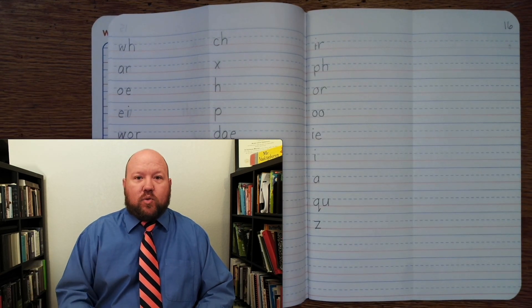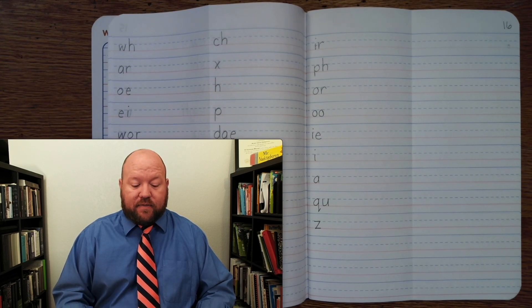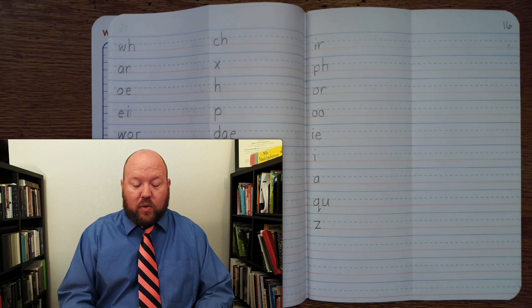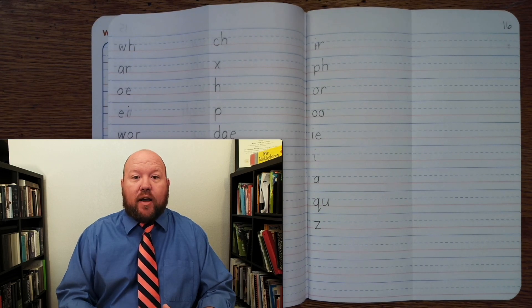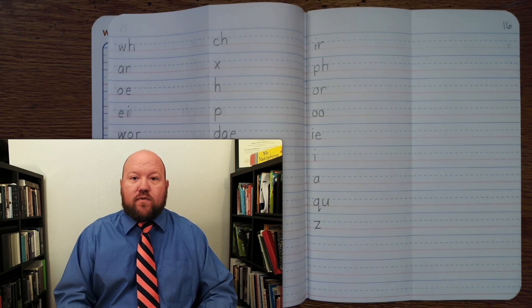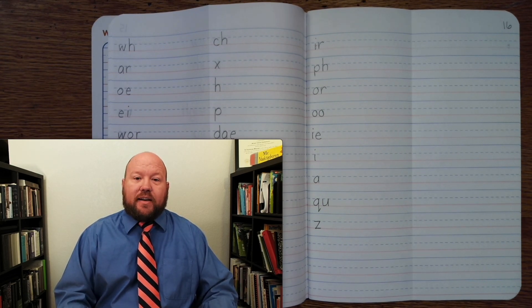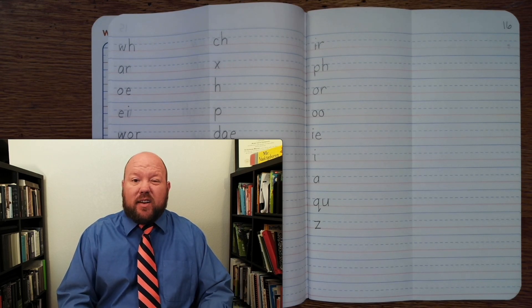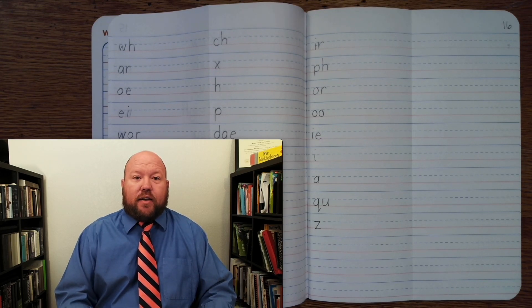This time through, I'll say the sounds followed by the cue. You should say the sound as well, and then write it. Now, when you write it, don't look at mine. Do your best to do it on your own from memory. Once you're finished, look at mine to see if you got it correct. If you did, great. If you didn't, that's okay. Just put a line through it, write the correct one beside it.